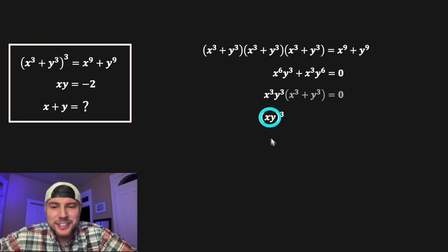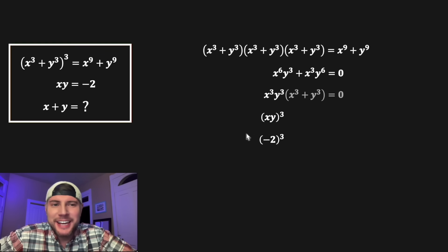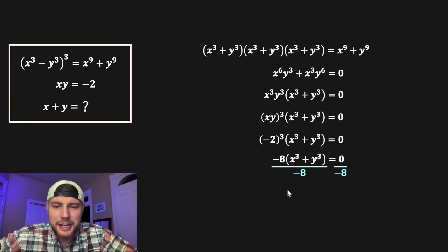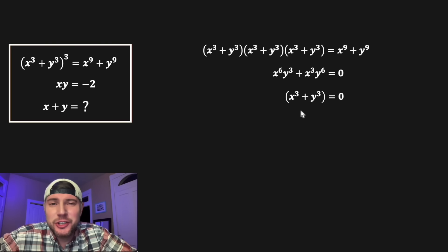Since x³y³ is (xy)³, and we were given that xy = -2, we can substitute: (-2)³ = -8. So we have -8(x³ + y³) = 0. Dividing both sides by -8 leaves us with x³ + y³ = 0.